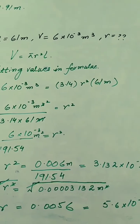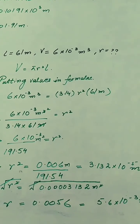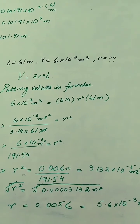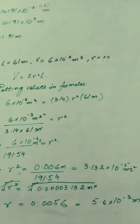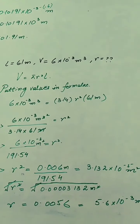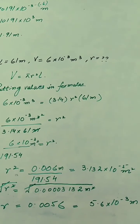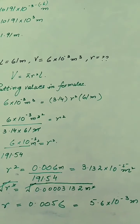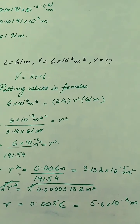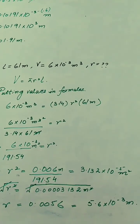Taking the square root of both sides to remove the square from r: r = √(3.132×10⁻⁵) = 0.0056 m. Converting to standard form by shifting the decimal point three places to the right, the power becomes 10⁻³. So the final answer is r = 5.6×10⁻³ meters.